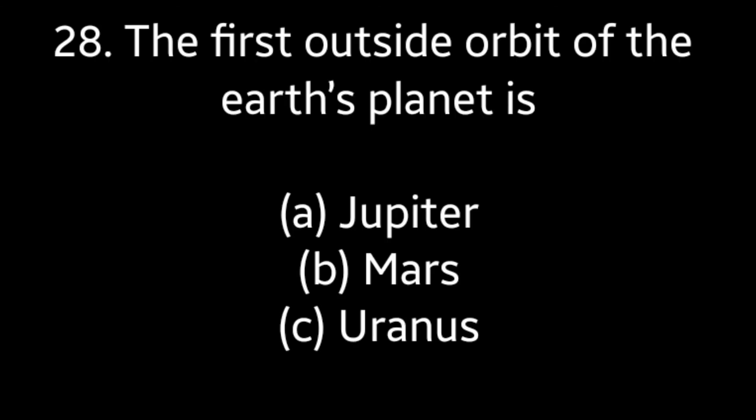Question number 28: The first outside orbit of the Earth's planet is — Jupiter, Mars, Uranus. Answer is option B — Mars.